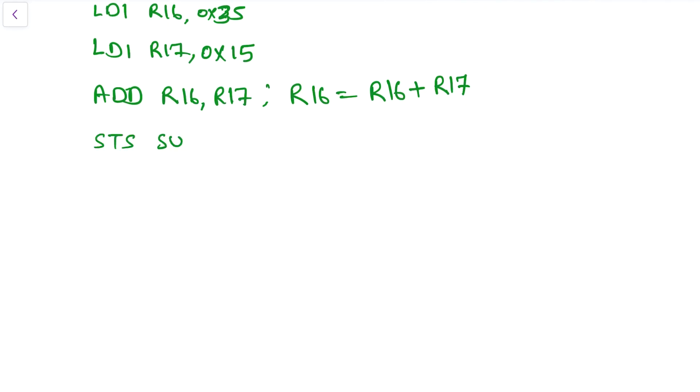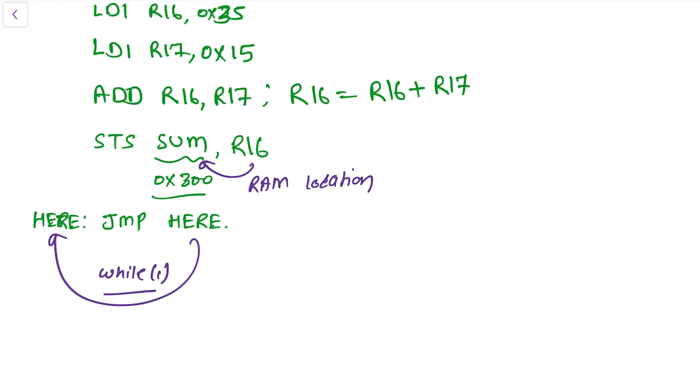So what we can do: we can do STS at the sum, and then R16. That means this is the location which is virtually 0x300 into the RAM. And then finally, we can do the SPS here. If we are going to have our data at this location, we can do it. So this is a kind of while one loop, and this will store into the RAM location, RAM location 0x300.